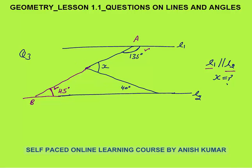Now CDB is a triangle and the sum of all three angles in a triangle is 180 degrees. So 45 plus 40 equals 85, and this angle would be 180 minus 85 equals 95 degrees. This is a straight angle, so X plus 95 equals 180, therefore angle X is 85 degrees — that is your final answer.